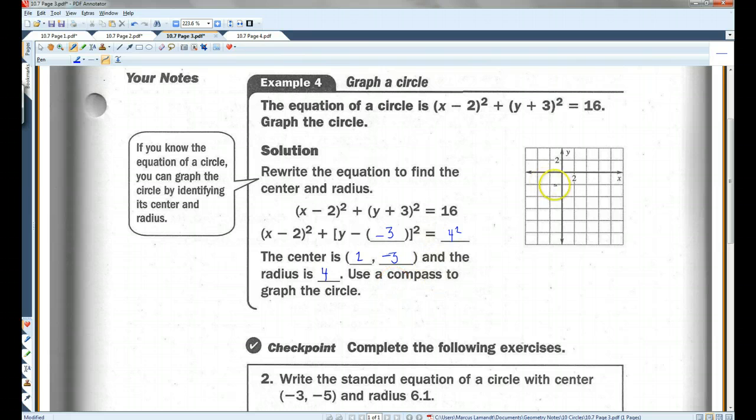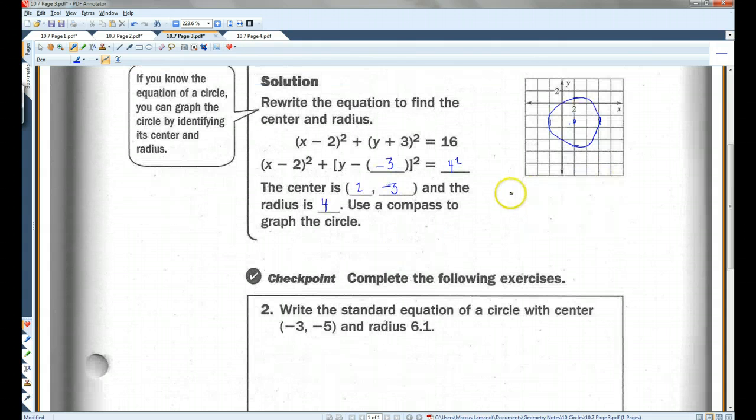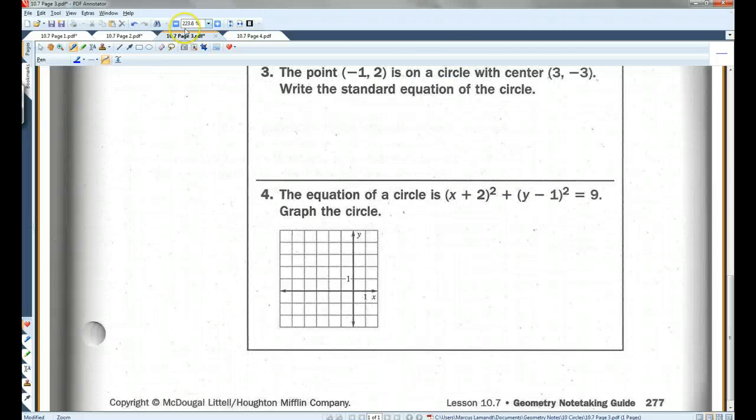We don't need to use a compass, we can just graph it. So (2, -3) is the center. Actually, these are 2, each of these lines are worth 2, not 1, my bad. So this is going to be about here. I'll go up to, over to, over to, so a circle about like this. It doesn't need to be perfect, that's fine. You guys can do the checkpoint. Let's go on to the last page.